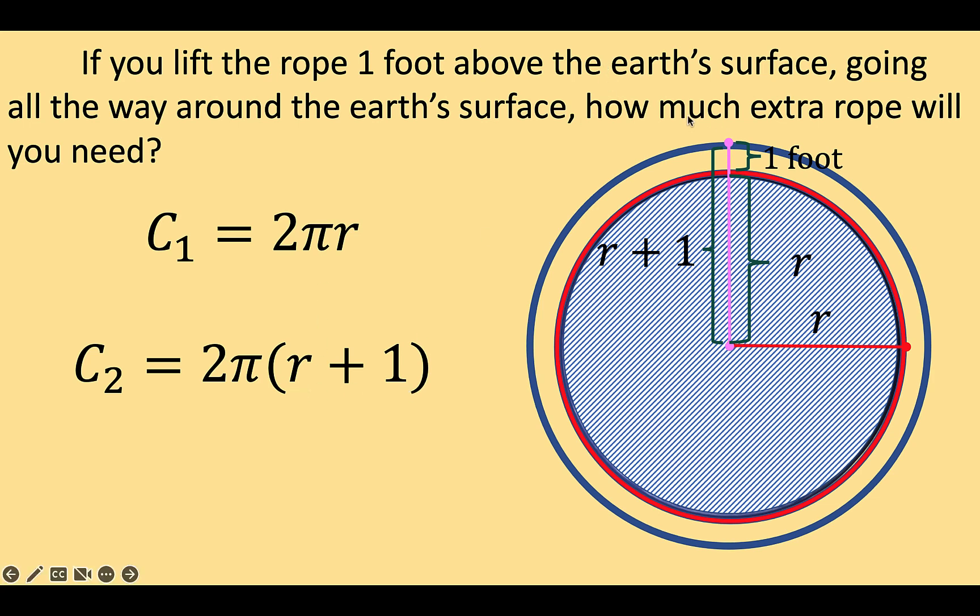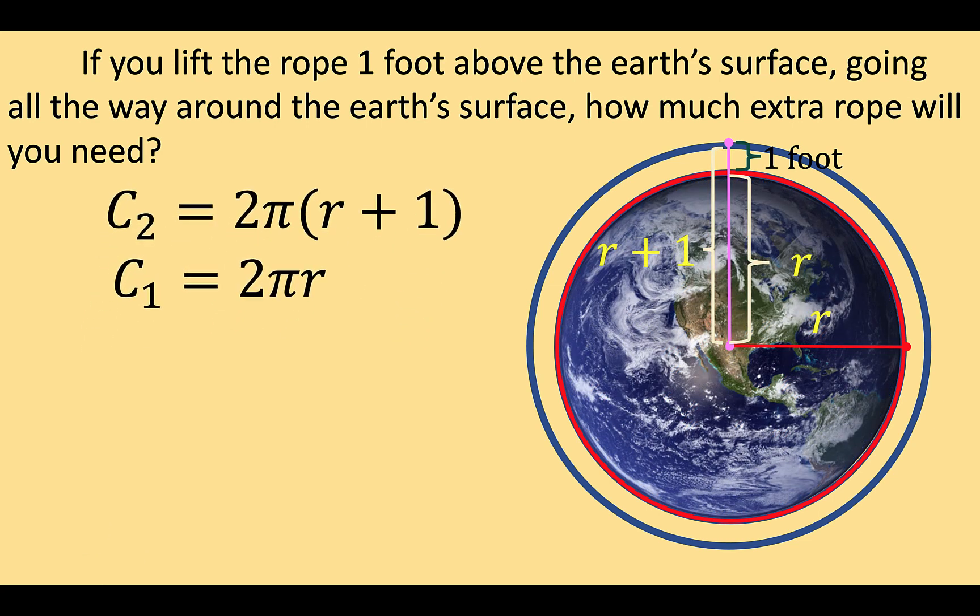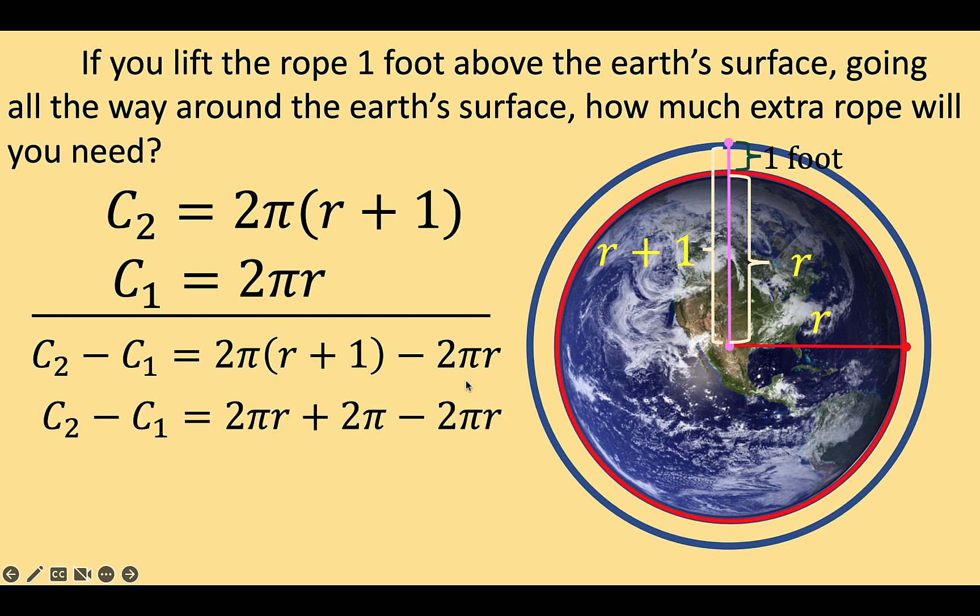Now to compute for the extra rope, we are going to subtract C₂ minus C₁. And so we now have this result. C₂ is 2π times the quantity R plus one minus C₁, which is 2πR. Simplifying, we can distribute 2π to R plus 1 to arrive at 2πR plus 2π and then minus 2πR.